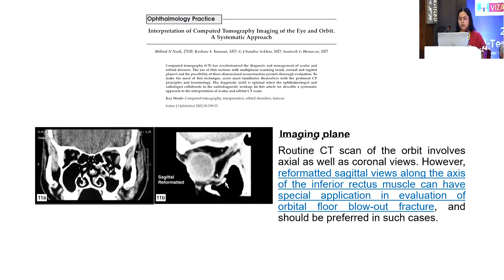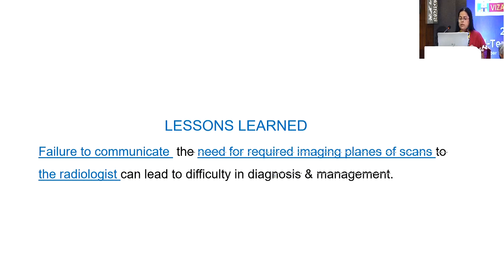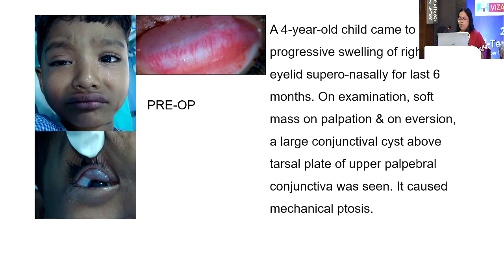The patient is still under follow-up and doing well. In cases of fracture of the orbital floor, we should clearly request a reformatted sagittal view along the axis of the inferior rectus muscle — this is a must for evaluation, management, and diagnosis. Our mistake was that we wrote axial and coronal scans but not the reformatted views, so we didn't get them. Lesson learned: if we don't clearly communicate which imaging planes are necessary, it can lead to difficulty in diagnosis and management.